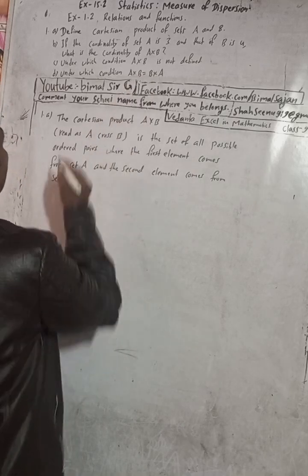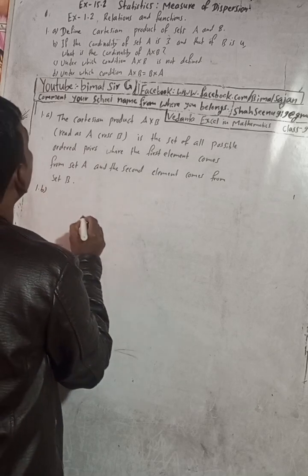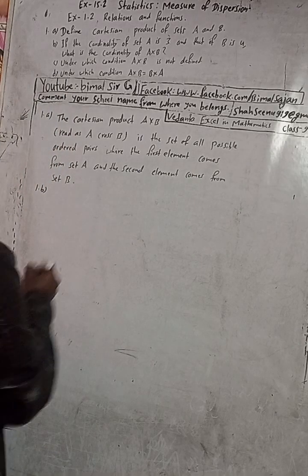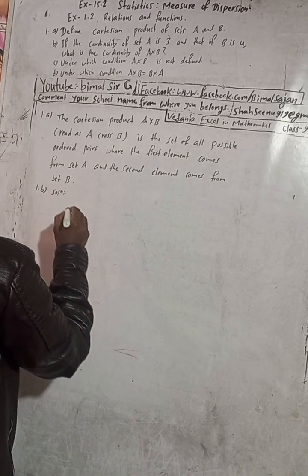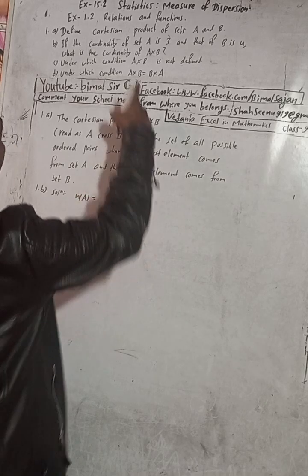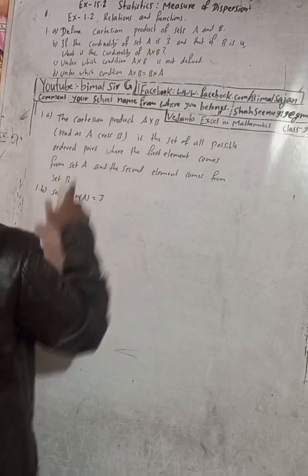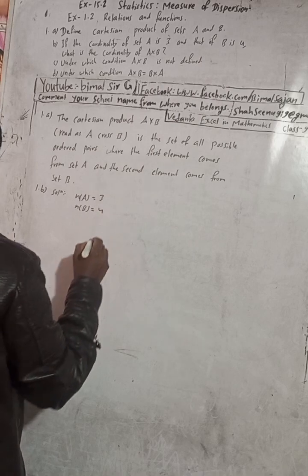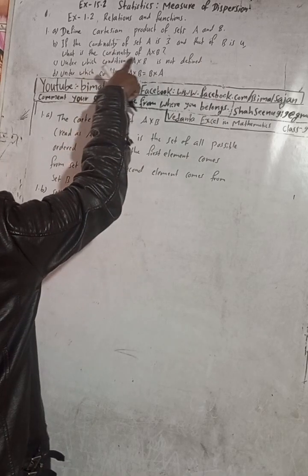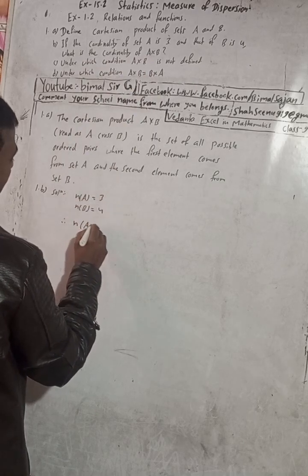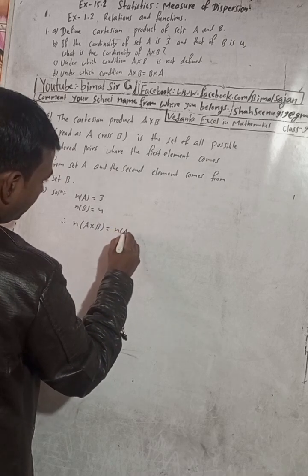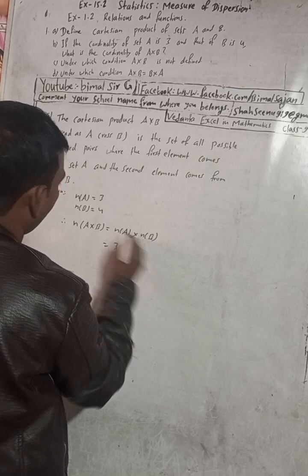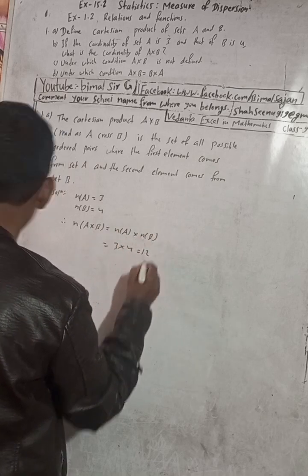Part B: If the cardinality of set A is 3 and that of B is 4, what is the cardinality of A cross B? Solution: n(A) = 3 and n(B) = 4. Therefore, the cardinality of A cross B is equal to n(A) × n(B) = 3 × 4 = 12.